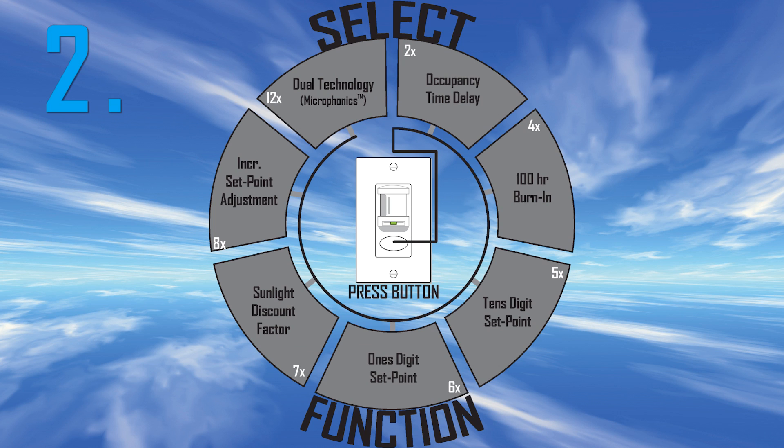Step 2. Select Function 2, Occupancy Time Delay, by pressing the button twice.